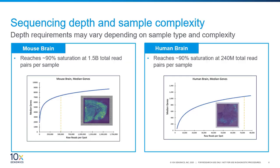Sequencing depth can also depend on the number of transcripts present in your tissue, which can be linked to the tissue type or tissue quality. Here we are comparing the same mouse brain sample to a human glioblastoma sample, which has significantly fewer transcripts present within this region of the tissue. As a result, the human brain reaches near saturation at 240 million read pairs — one-sixth of the read pairs required to reach the same saturation level for the mouse brain sample, despite the fact that the human brain tissue covers 12% more spots.